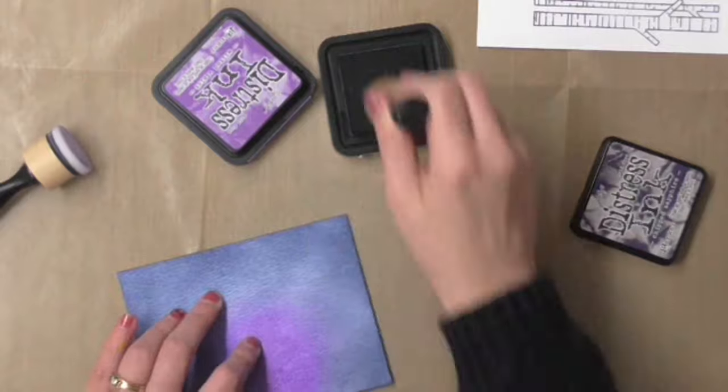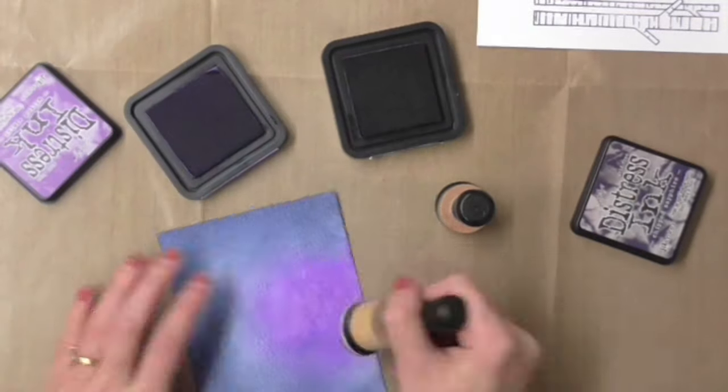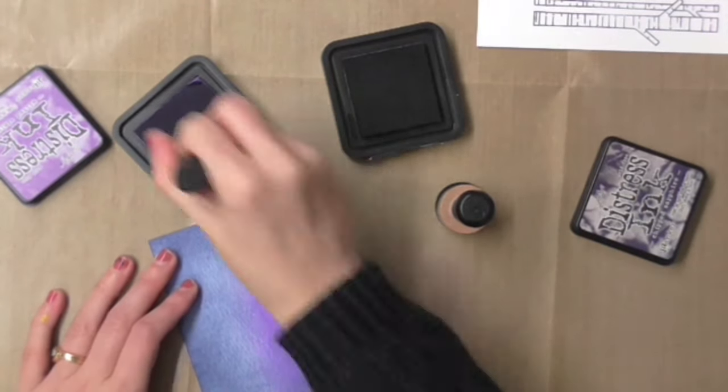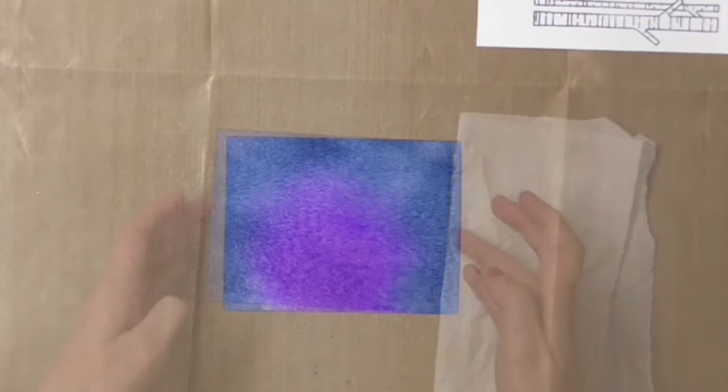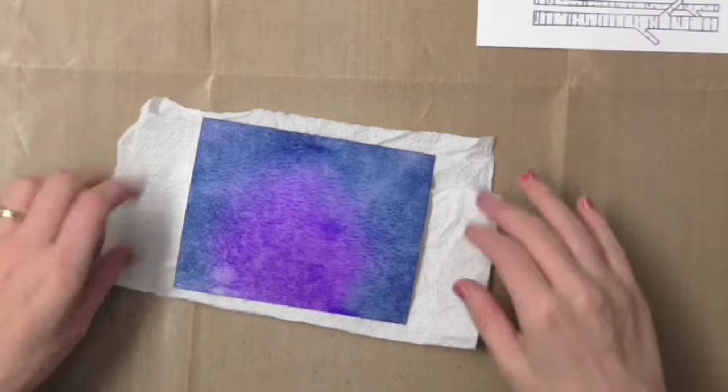I'm using my mini blending tool to add some color to some Tim Holtz Distress Watercolor cardstock and then spraying over the top with some water and I'll set that aside to dry and move on to the next bit of my project.